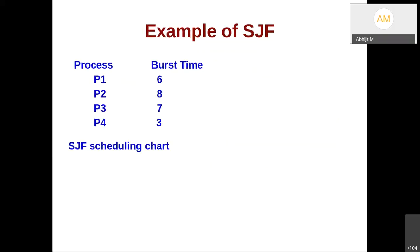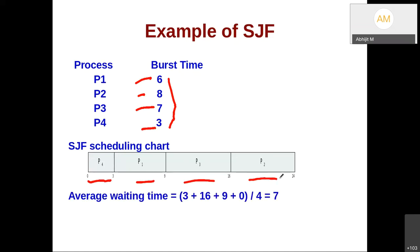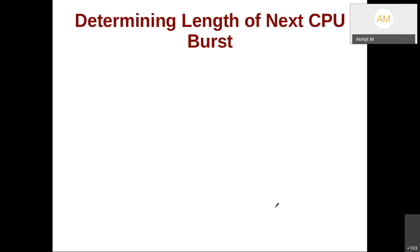Here is an example of SJF with four processes and their burst times. The shortest gets scheduled first: P4, then P1, then P3, then P2, giving that Gantt chart. P1 waited 3, P2 waited 16, P3 waited 9, giving an average waiting time of 7. Since knowing the next CPU burst is practically not possible, you can try to do an approximation — assuming the future will be like history. You can know the history of a process and predict the future based on it. You can schedule the process with the shortest predicted next CPU burst.